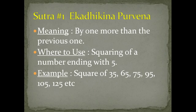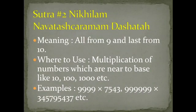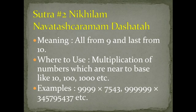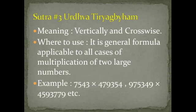Sutra 2 is Nikhilam Navtah Charmam Daste. I have already explained this Sutra in detail with examples in our first 3 videos. The meaning of this Sutra is 'all from 9 and last from 10.' We can use this for multiplication of numbers which are near to a base like 10, 100, or 1000 — for example, 9999 multiplied by 7543. You can watch our previous videos to learn this Sutra in detail.